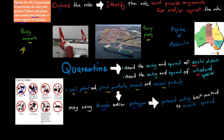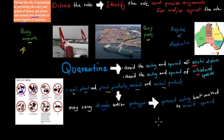We also avoid the entry and spread of introduced species into Australia or across Australia. When it comes to quarantine, providing arguments for it — it's very useful. If we don't have quarantine, things could come into Australia, and once they are in Australia, it would be very hard to stop them. Quarantine is the most effective way of preventing the rapid spread of diseases that might come from these different products.